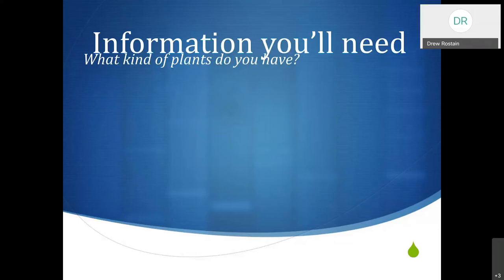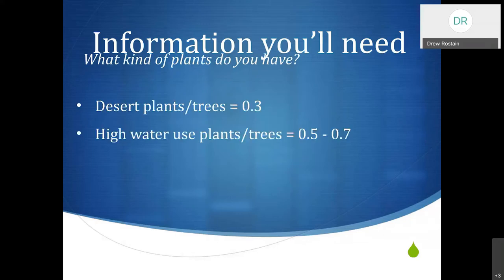High water use plants and trees might include hibiscus. If you have queen palms, that will be in this category as well — anything that is not a desert plant or tree but is planted in the ground. And then if you have lawn, depending on whether it's cool season or warm season grass, those numbers are going to be 0.6 to 0.7. Keep this in mind — we're going to reference it again when we go through programming.